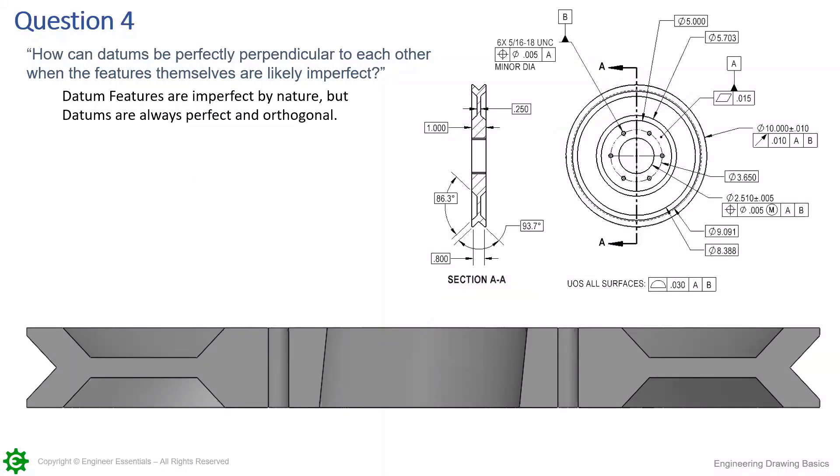Datums are theoretical but they're always going to be perfectly orthogonal by nature. Datums in a datum reference frame are always perfectly orthogonal. However, we know that for example this plane up here is datum A.